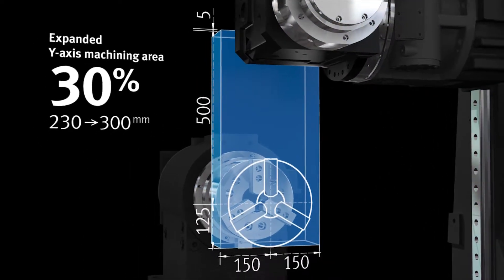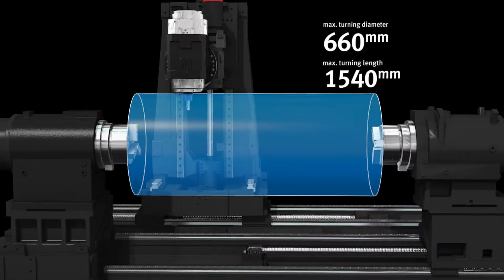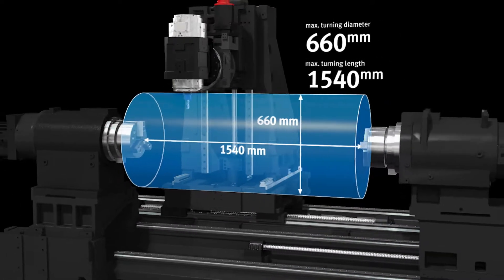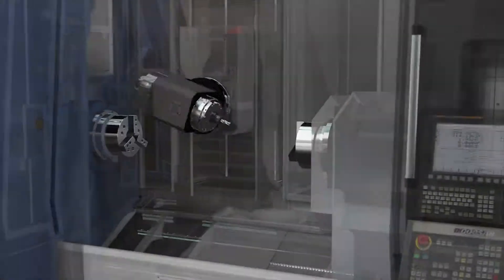In an orthogonal structure, the Y-axis machining scope has been expanded, and because of an increased machining area and bar turning diameter, the series can work on bigger and longer workpieces.